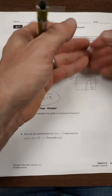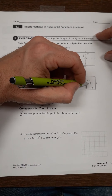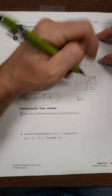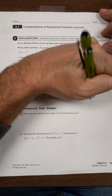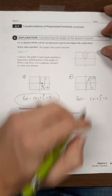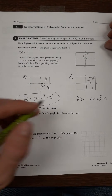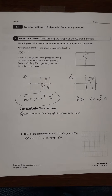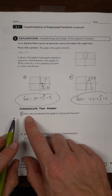This quartic had three things happen: it got flipped vertically, moved to the right two, and moved up two — so the key point is now at (2, 2) and it's flipped. Right two inside the parentheses gives x − 2, to the fourth power, plus two for the vertical shift. The vertical flip goes outside the parentheses as a negative, giving f(x) = −(x − 2)⁴ + 2.